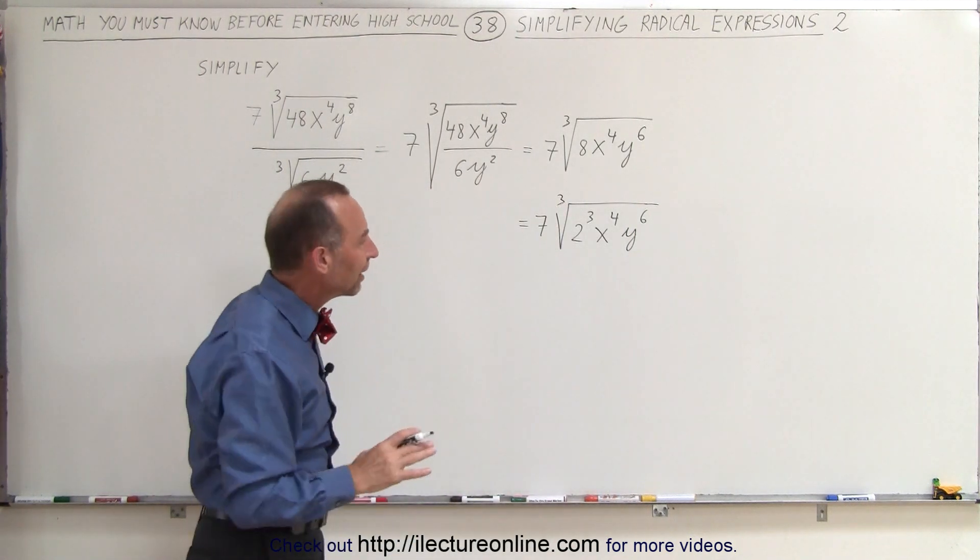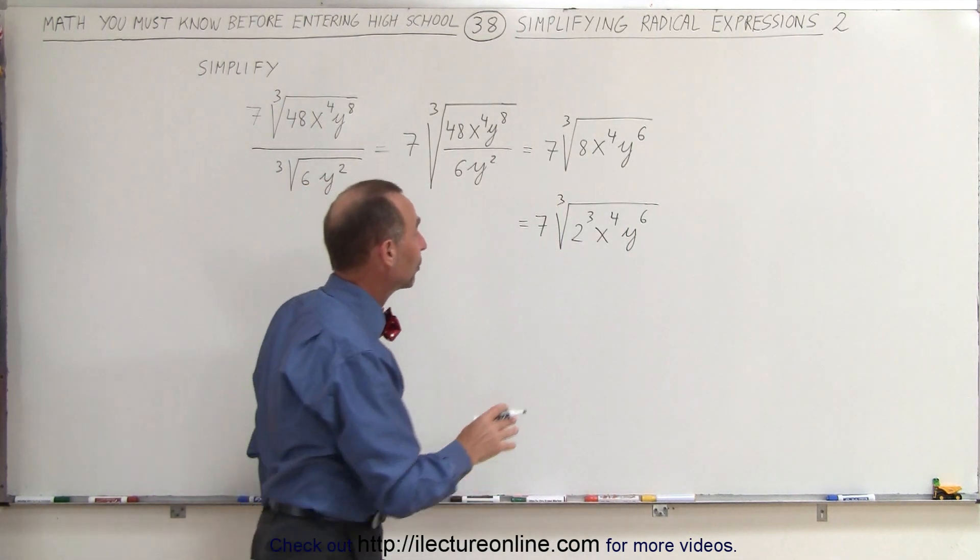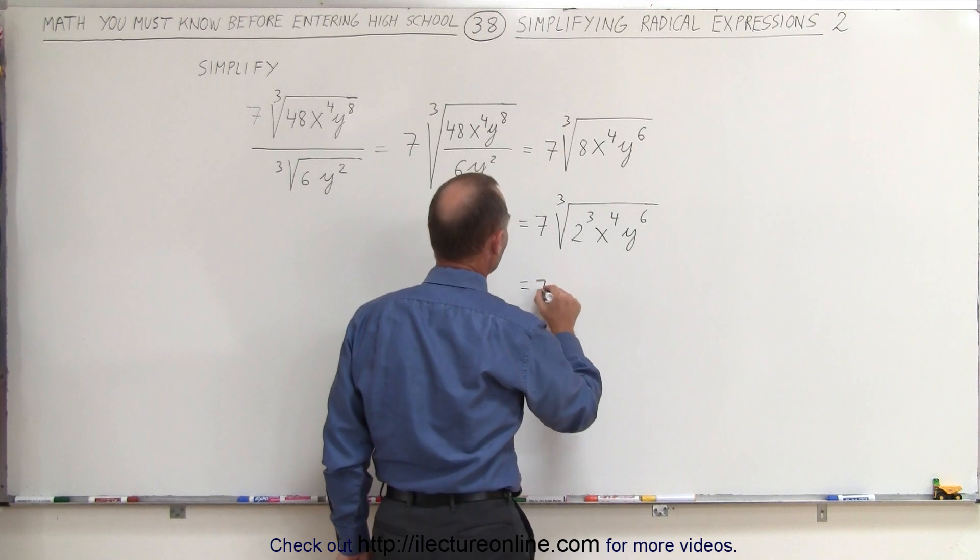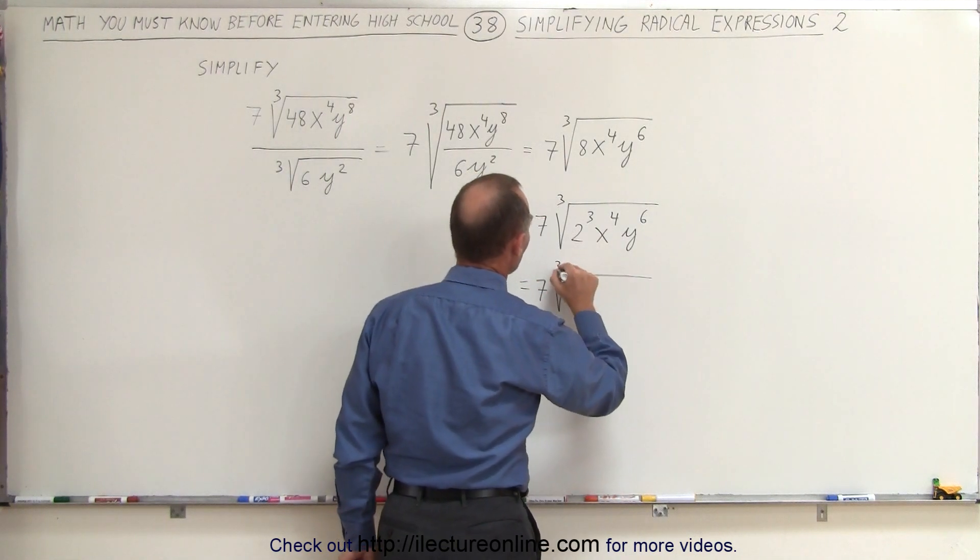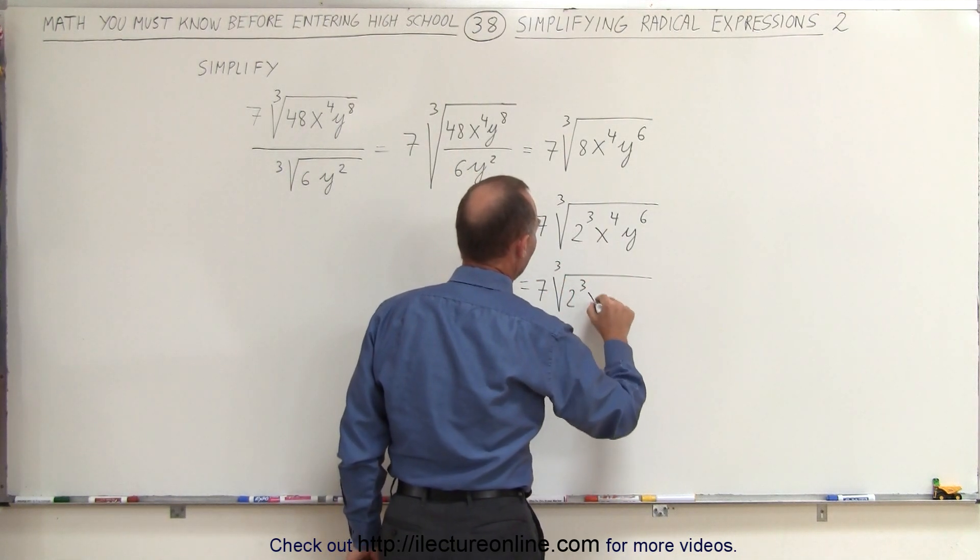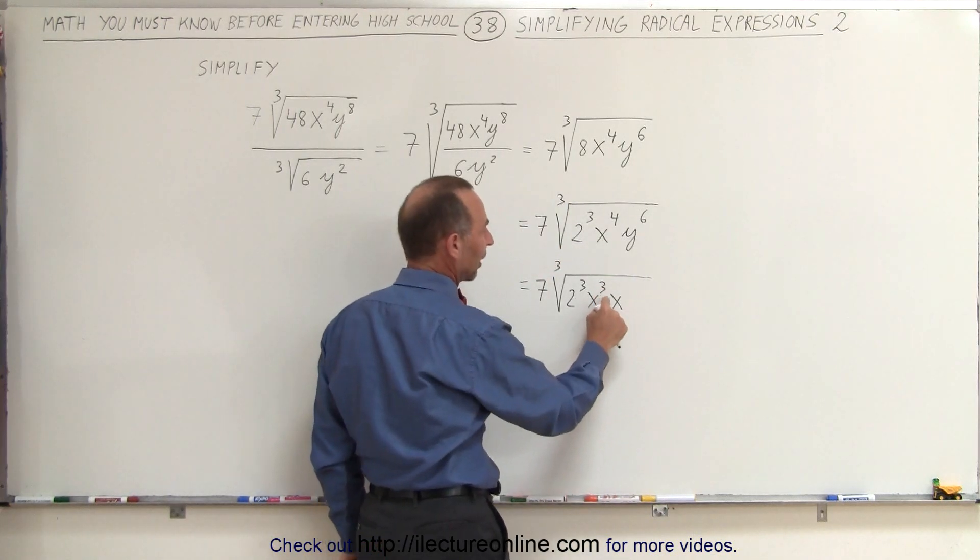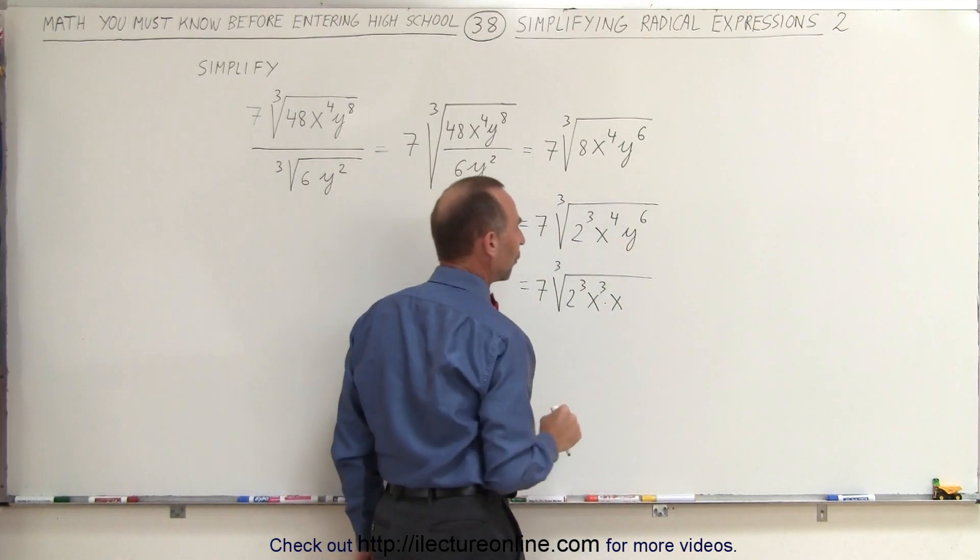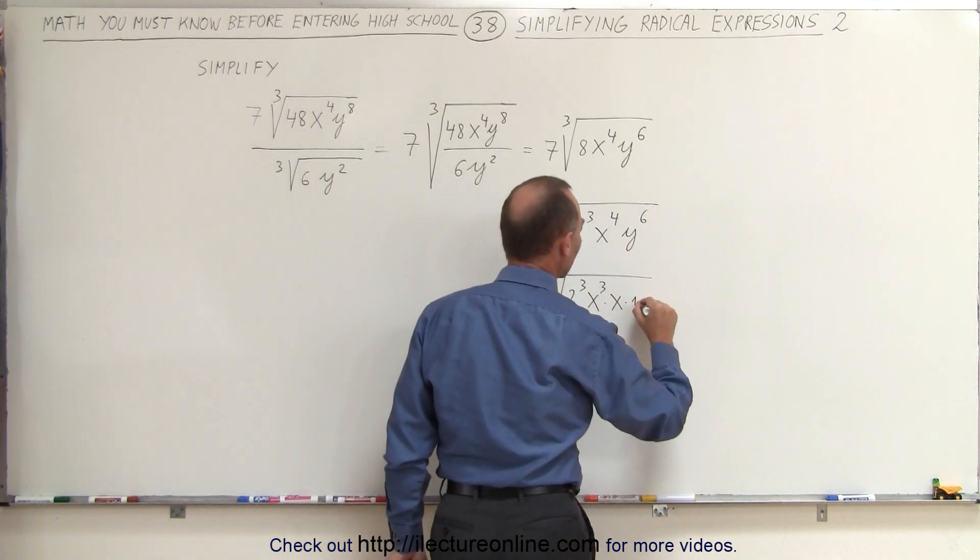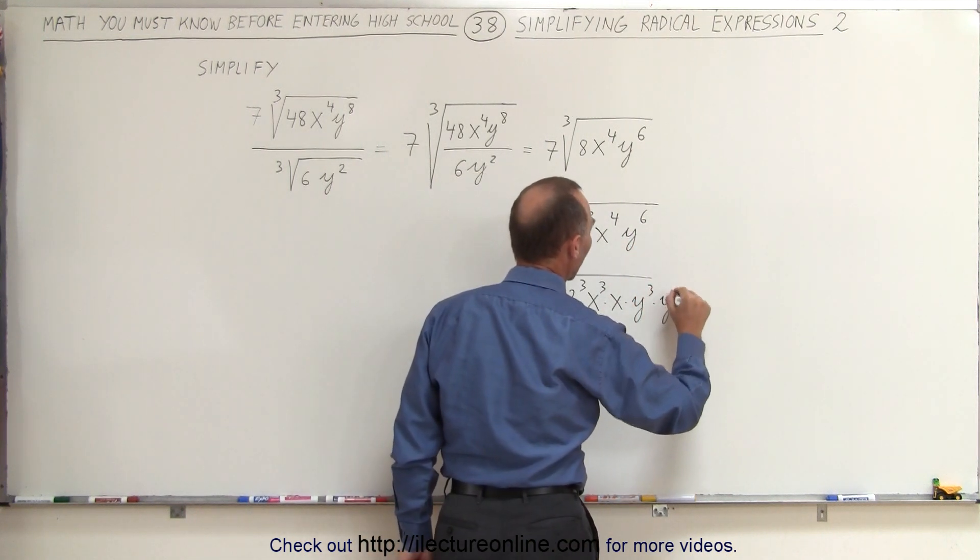And then, to simplify that even further, we can write as follows. This is equal to 7 times the cube root of 2 cubed, x to the 3rd times x to the 1st power, because x to the 3rd times x to the 1st power gives us x to the 4th, and this can be written as y cubed times y cubed.